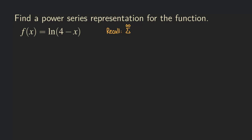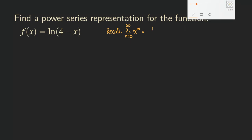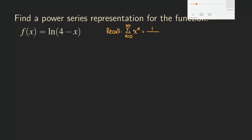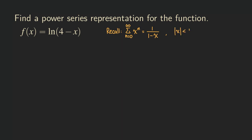We start with the geometric series: the sum of x to the n equals one over one minus x, where the absolute value of x is less than one.